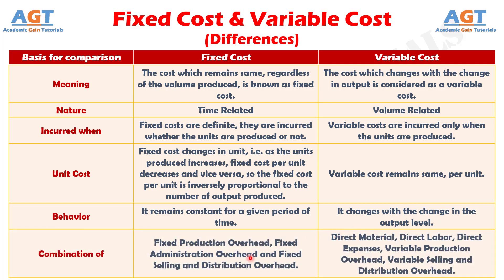Number six: fixed cost is a combination of fixed production overhead, fixed administration overhead, and fixed selling and distribution overhead, whereas variable cost is a combination of direct material, direct labor, direct expenses, variable production overhead, and variable selling and distribution overhead.